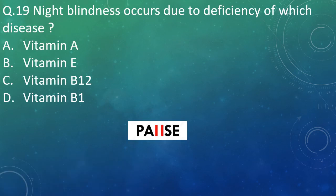Question 19: Night blindness occurs due to deficiency of which vitamin? Option A: vitamin A. Option B: vitamin E. Option C: vitamin B12. Option D: vitamin B1.